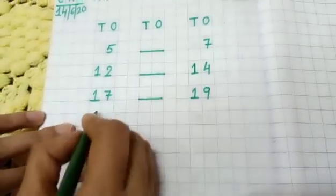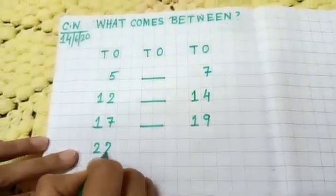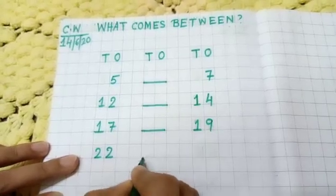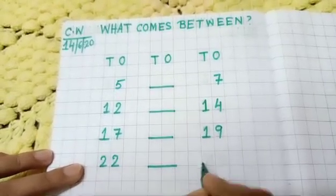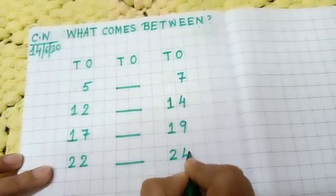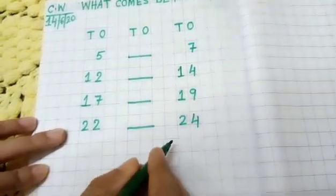Now next one. Twenty, two. Give your dash. Write here. Twenty, four. Ok.